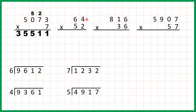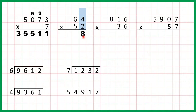Now 64 times 52. So we're going to multiply 64 by 2 in our first answer line. Then we're going to multiply 64 by the 5 tens in our second answer line, and then we're going to add up our answer lines. 4 times 2 is 8 and 6 times 2 is 12.